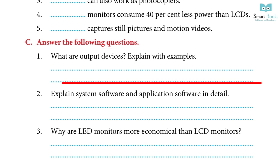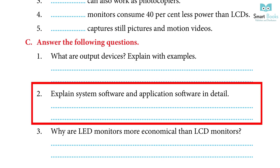2. Explain system software and application software in detail. Answer: System software is designed to run a computer's hardware and provides a platform for applications to run — example: Operating System. An application software is a software that fulfills a specific need or performs tasks — examples: Paint, Excel, Games, Word, etc.